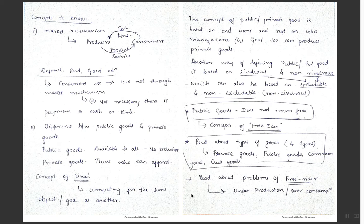Before we start, there are certain concepts we need to know. The topics we need to cover are: what is market mechanism, the difference between public goods and private goods, the concepts of rivalrous and non-rivalrous, excludable and non-excludable, the problem of free riders, and the concept of public provision and public production. These are the keywords for this topic.